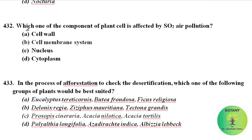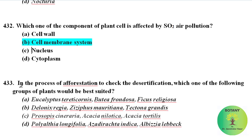Which component of the plant cell is affected by sulfur dioxide air pollution? The cell membrane system is the component of the plant cell that is affected by sulfur dioxide air pollution.